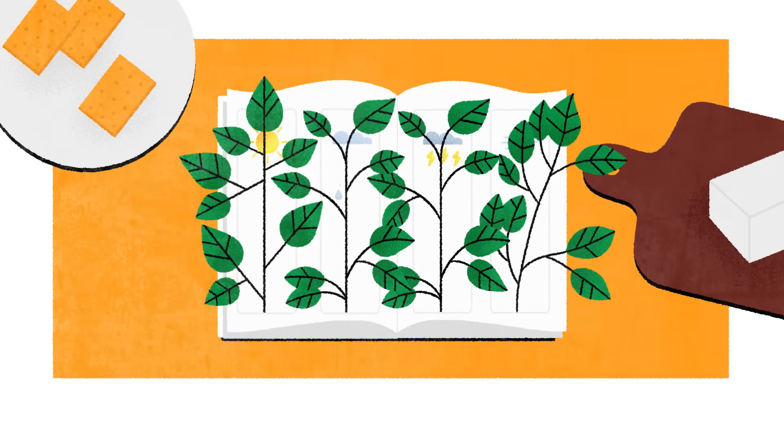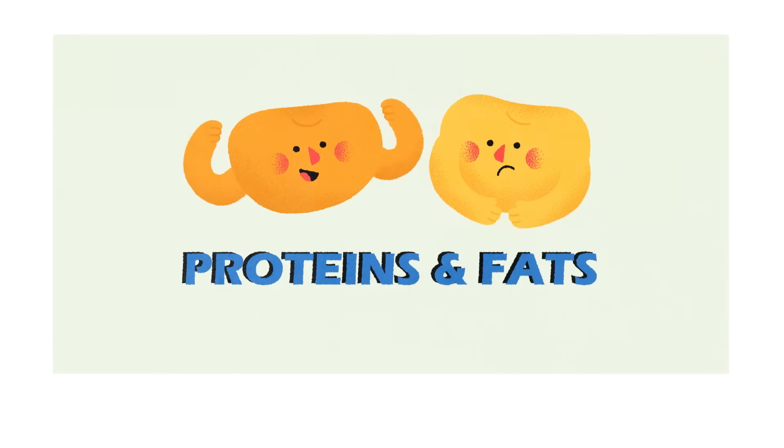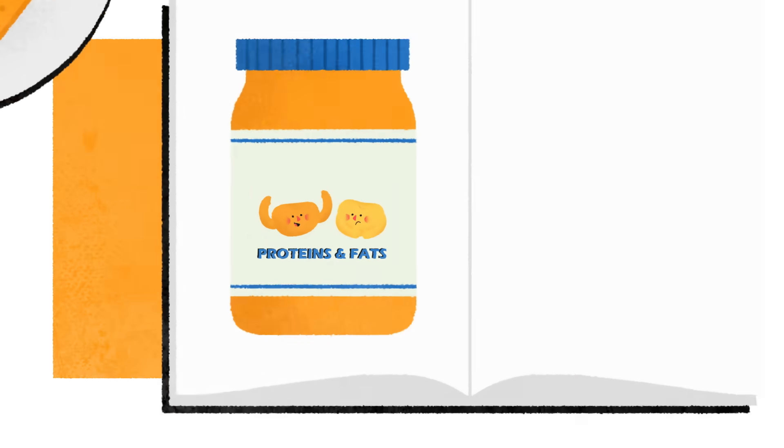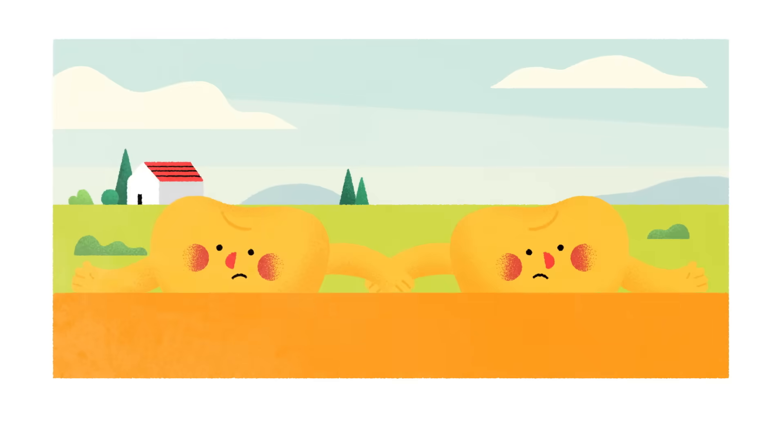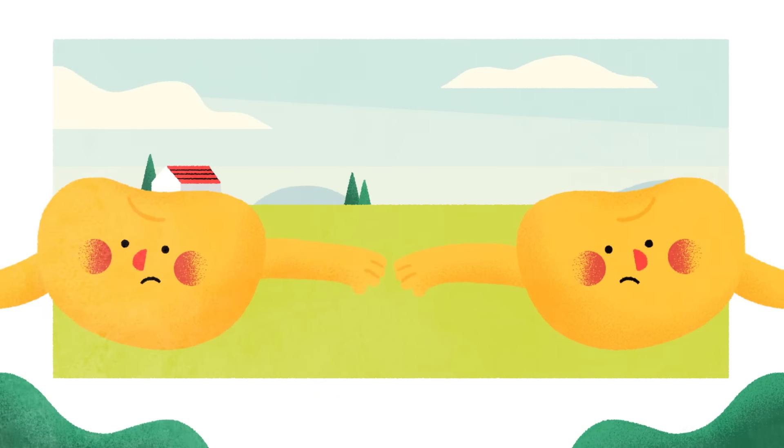And once they're grown, soybeans have an incredibly high density of proteins and fats — ingredients which in recent years have been used in everything from mayonnaise to biodegradable plastic. The ideal method for separating these components depends on what you're trying to extract.